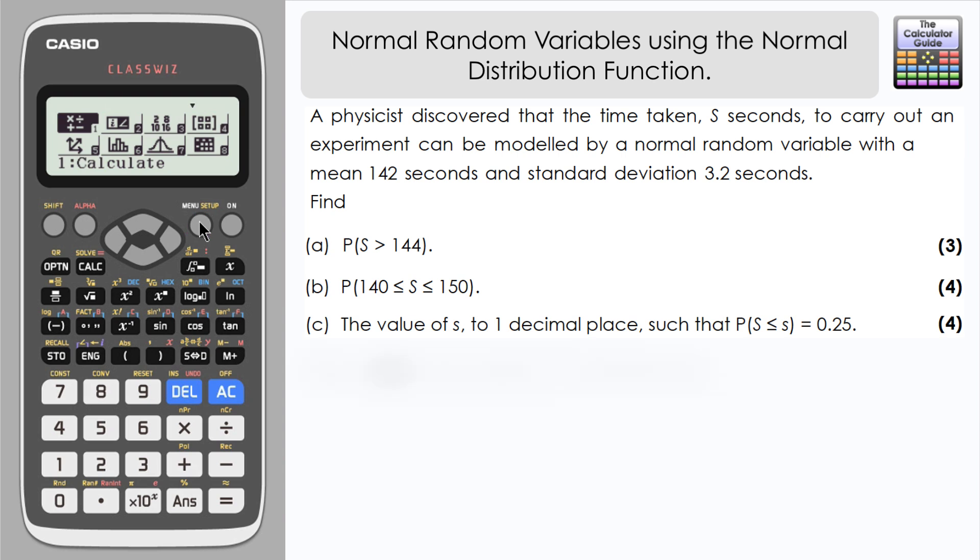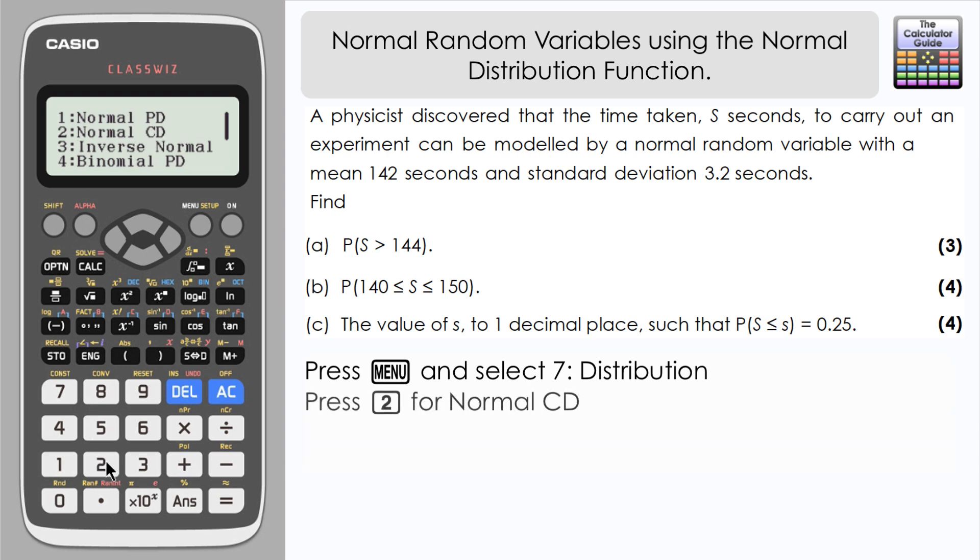Press menu and we want the distribution function which is 7. For the first two parts of the question, A and B, we need to access normal CD, that's normal cumulative distribution. So press 2.